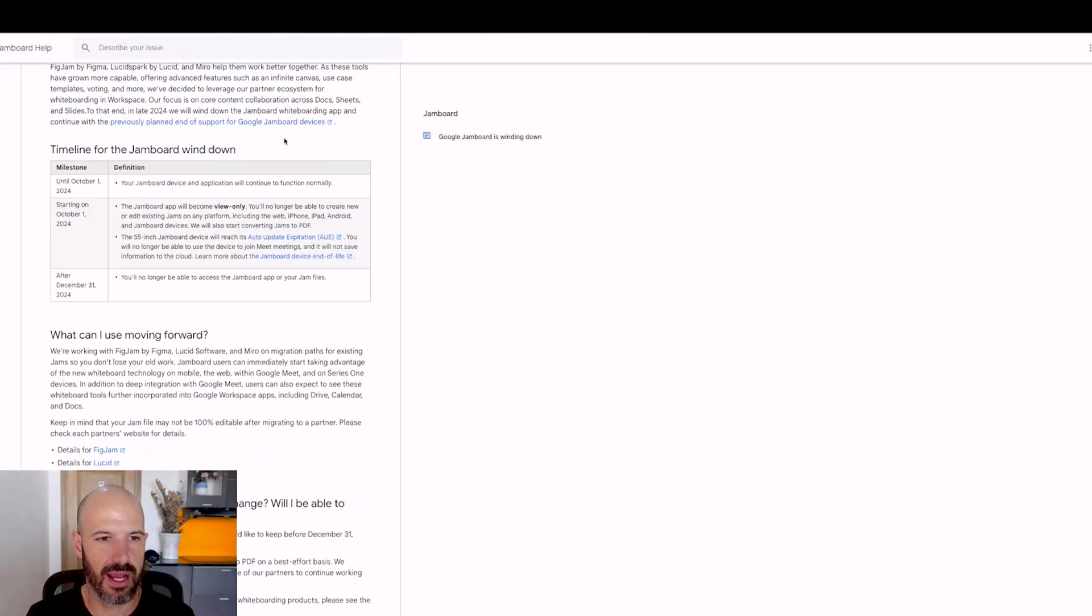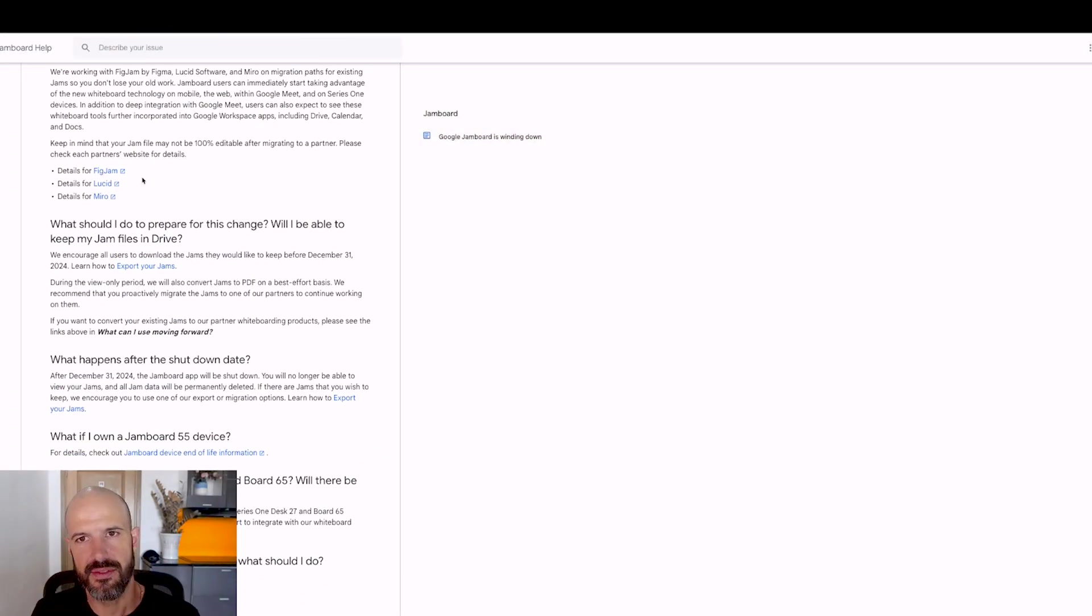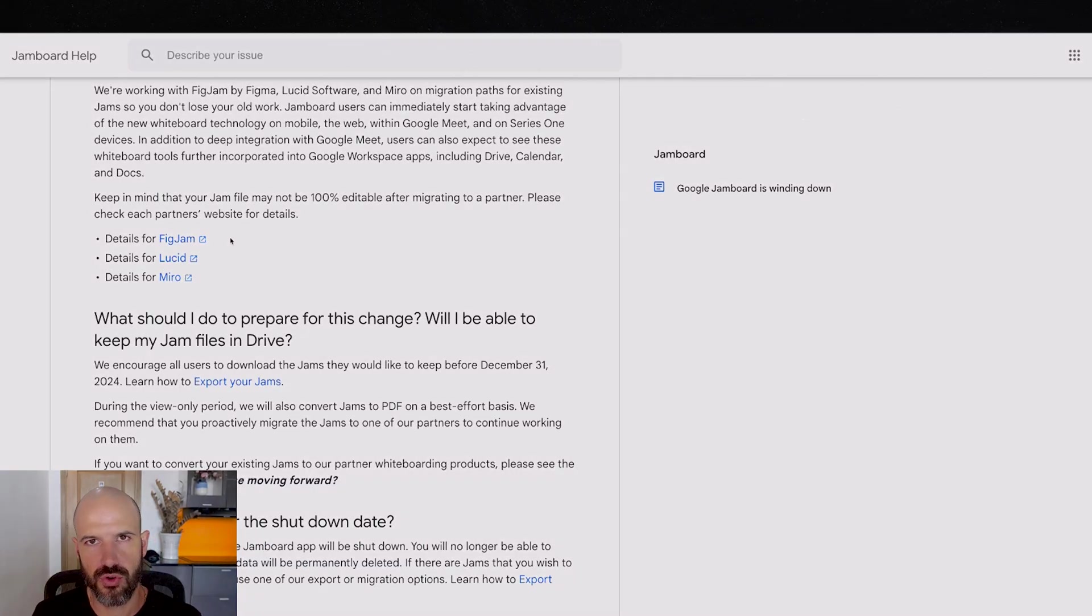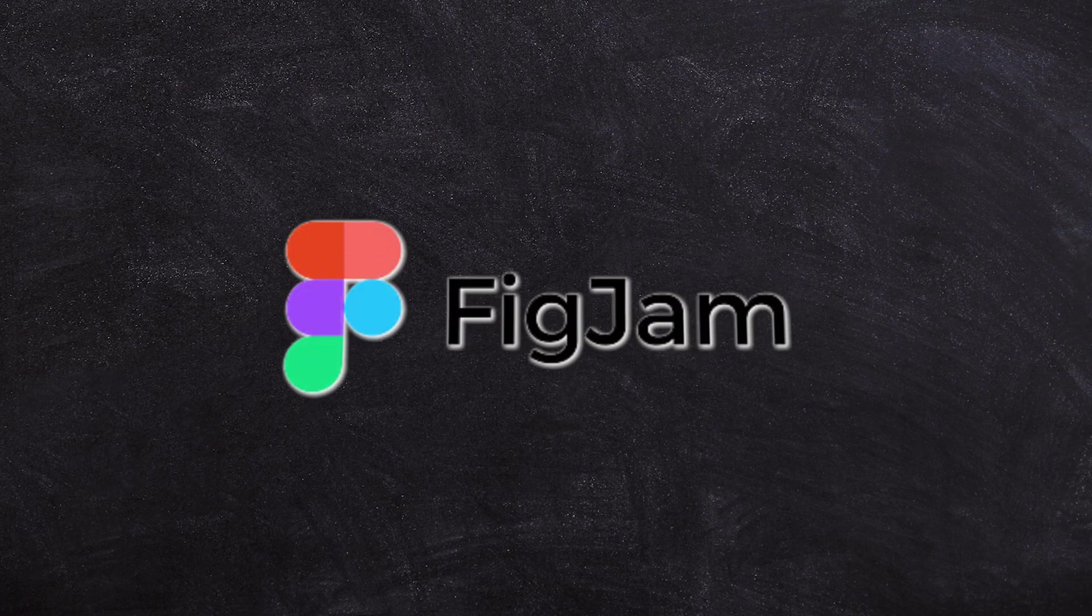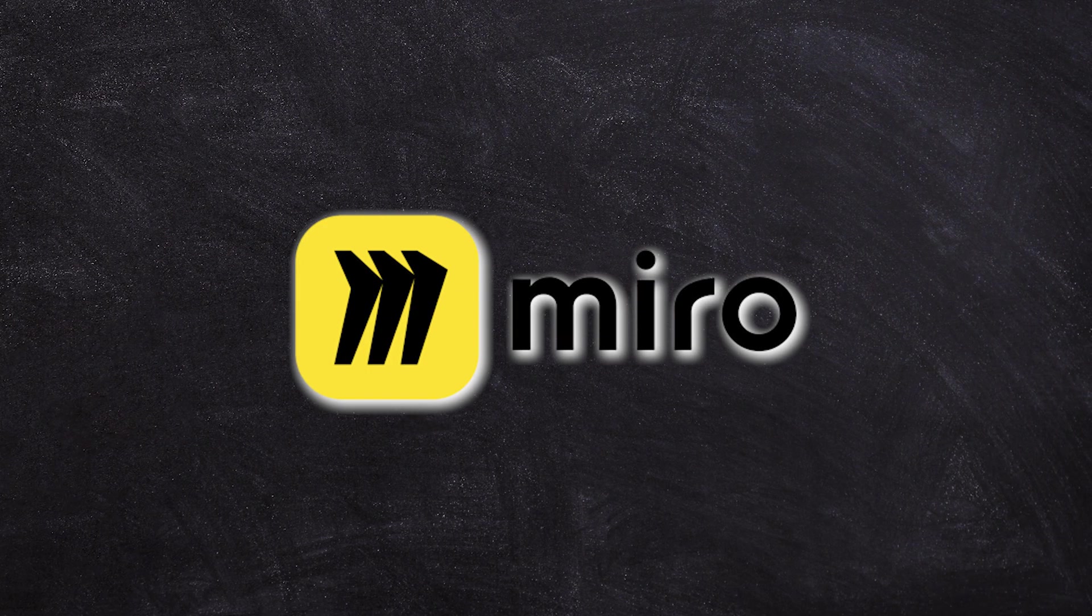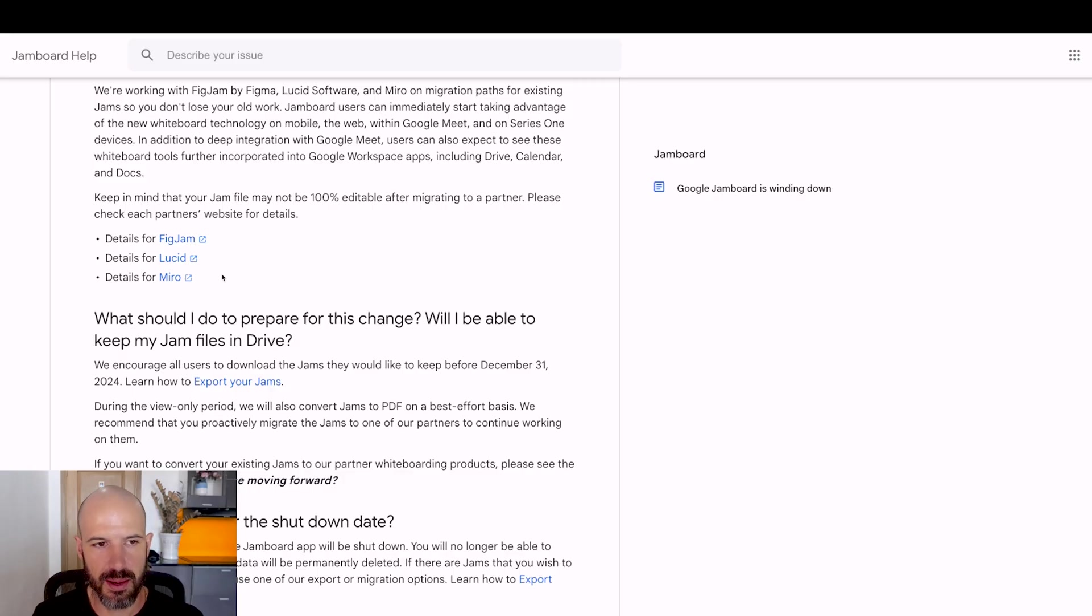Google have given us some options to export out jams. I'll show you what the help article looks like with the options on where to send them. There's three applications that have been made available with integrations that will let you transfer and convert them: FigJam, Lucid, and Miro. I've used FigJam once or twice, I've used Miro a number of times, I haven't personally used Lucid.